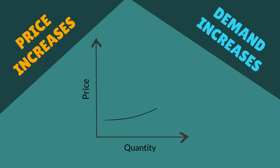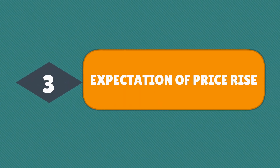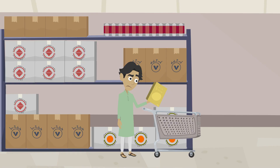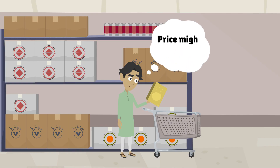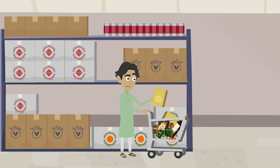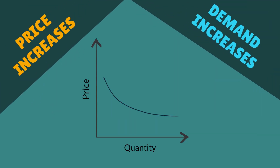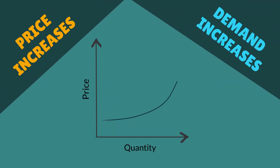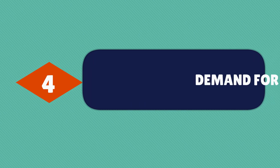This reversed the law of demand. The third exception is the future expectations of price rise. If a household expects the price of a commodity to increase, it may start purchasing a greater amount of the commodity even at increased prices, thus reversing the law of demand.